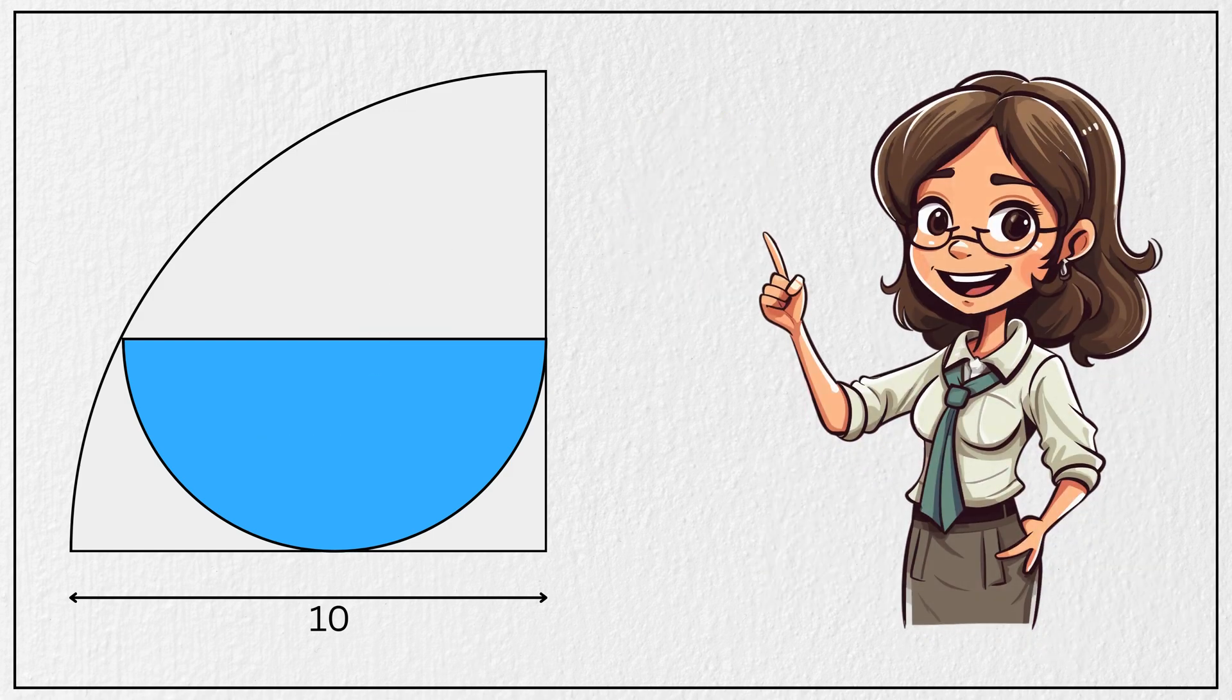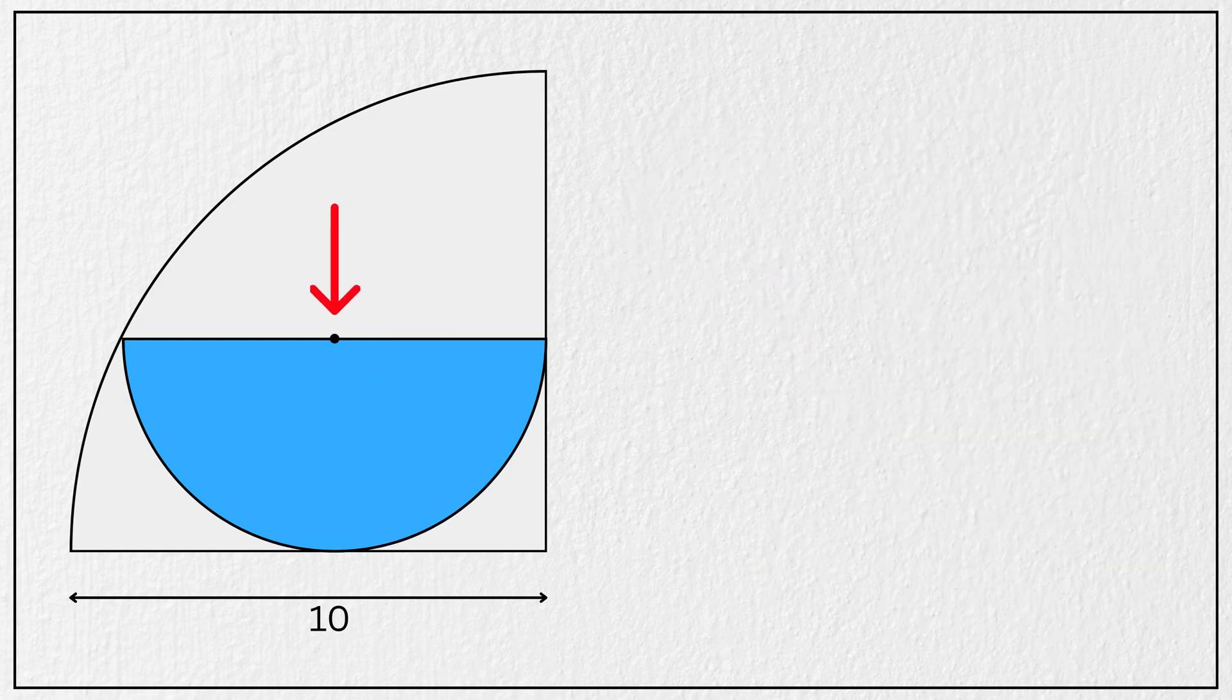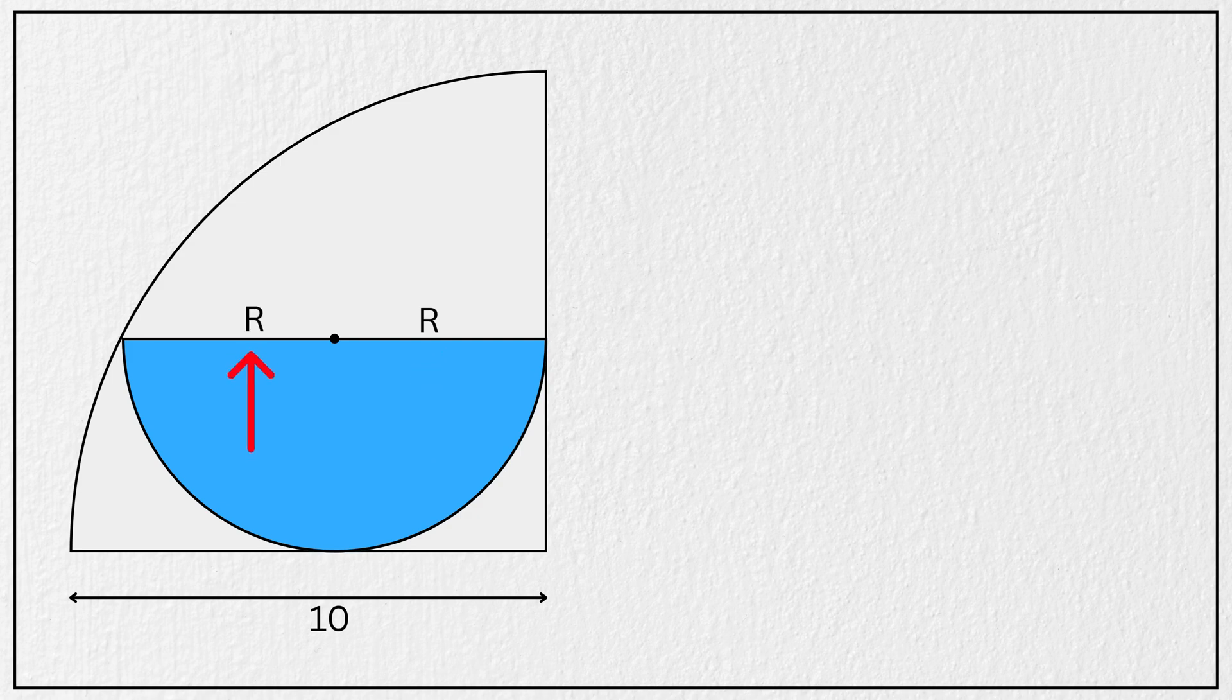All right, let us solve it together. First, let's mark the center of this blue shaded semicircle and define its radius as r units. That means this length is r units and this other length is also r units and diameter will be 2 times r.